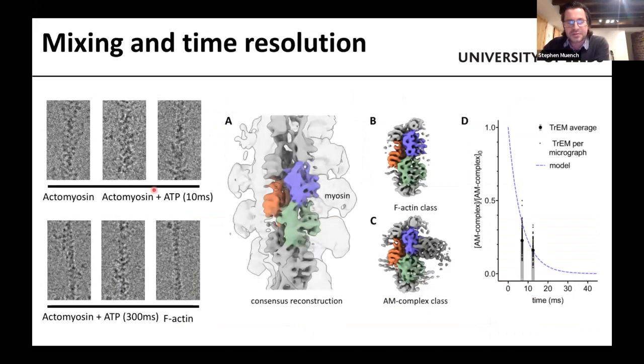So we can take the actin-myosin S1 ATP, we can generate various 3D reconstructions of this, which we have done at different time points. And then we've compared the ratio of the full complex to the dissociated complex, and compared that with what we'd expect. So the blue line is the expected kinetic result. And then in the grey, you can see what we got from our time-resolved experiments. So what we get is actually quite similar to what you would expect, based on the stopped flow experiments we've been doing.